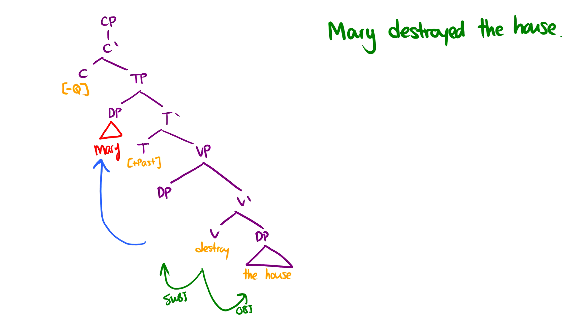So what will happen is we'll end up with a trace as a specifier of the VP because it moved up to the specifier of the TP. So now what happens is that the subjects and objects are getting theta roles from the verb destroy. So it's assigning agent to the specifier of the VP, and it's assigning theme to the complement of the VP.